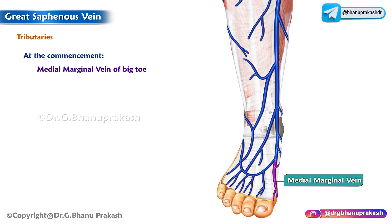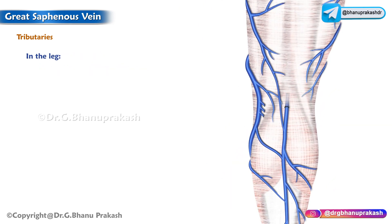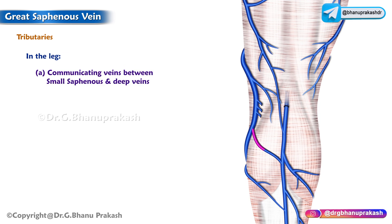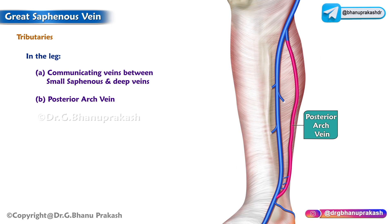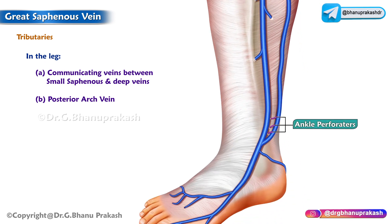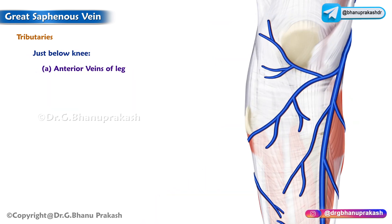Now let us talk about the tributaries. At the commencement of the long saphenous vein, the medial marginal vein of the big toe is the first and most important tributary at the origin. In the leg, there are communicating veins between the small saphenous and deep veins. Another important tributary is the posterior arch vein — it is fairly large and constant, collecting blood from the posteromedial aspect of the calf and draining small venous arches connecting the three medial perforating veins of the ankle, known as ankle perforators. Just below the knee, the anterior vein of the leg is an important tributary.